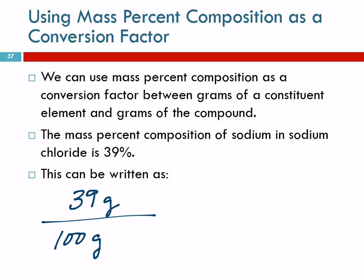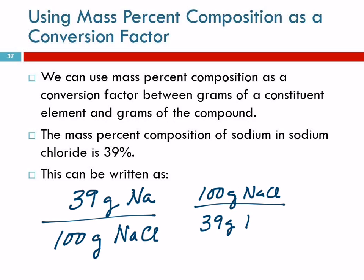So 39% can be written as 39 grams per hundred grams. That's what 39% means. 39 grams of what? Of the element — it's sodium. So 39 grams of sodium per hundred grams of sodium chloride. 39% sodium means that out of a hundred grams of the whole thing, 39 grams are sodium. This is an awesome relationship — it's a conversion factor. You can write it that way, or you can write it upside down.